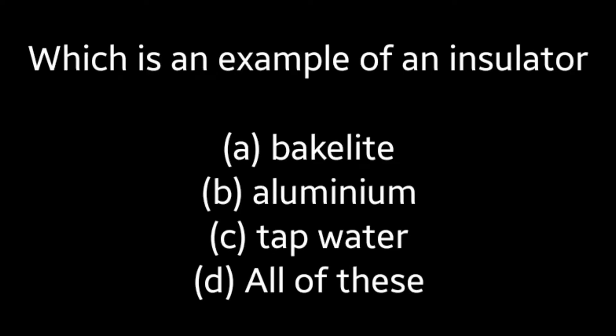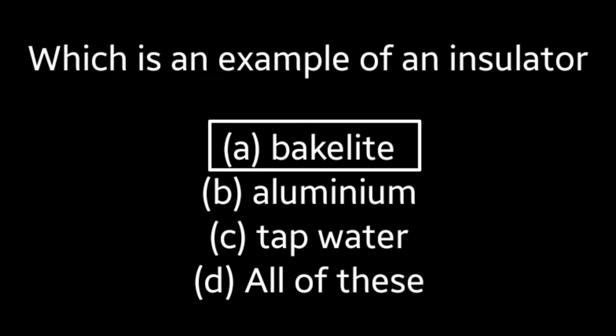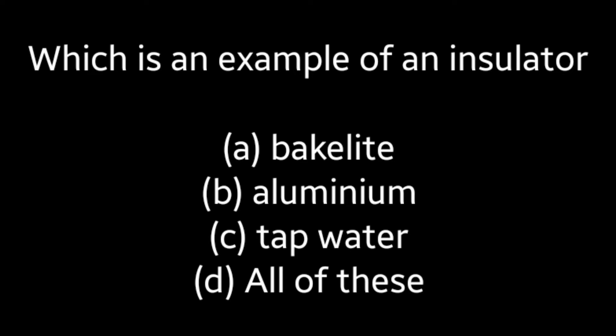Next question: Which is an example of an insulator? (A) Bakelite, (B) Aluminium, (C) Tap water, (D) All of these. Answer is Option A: Bakelite.